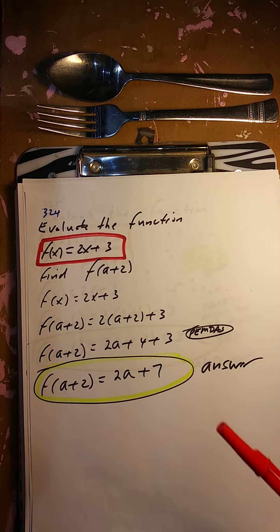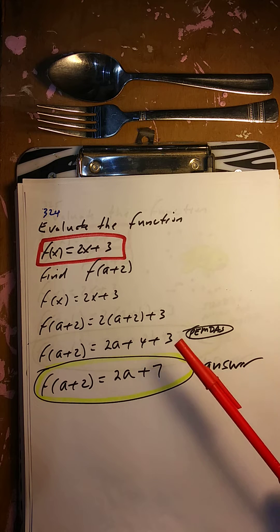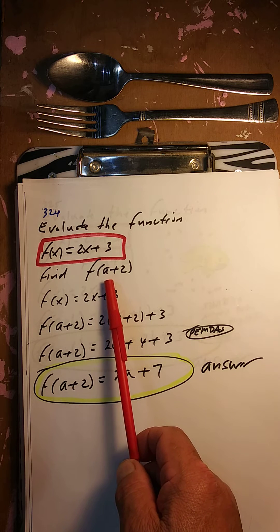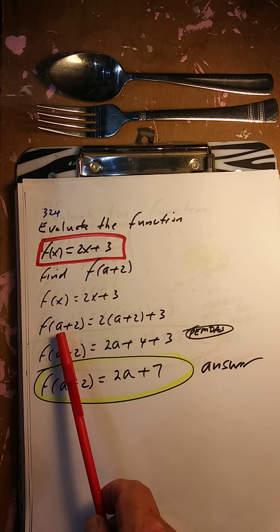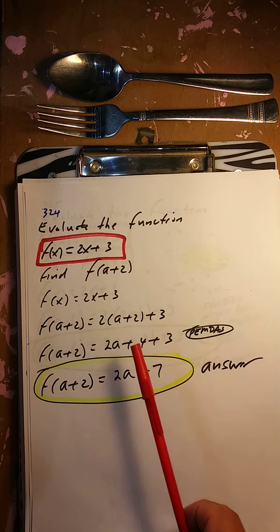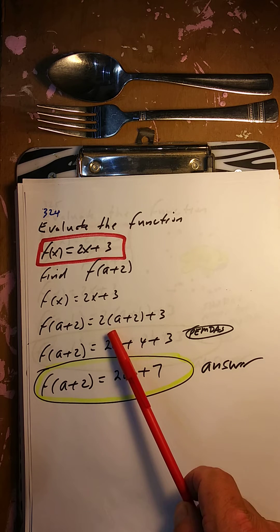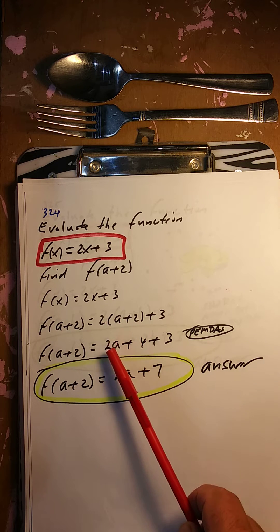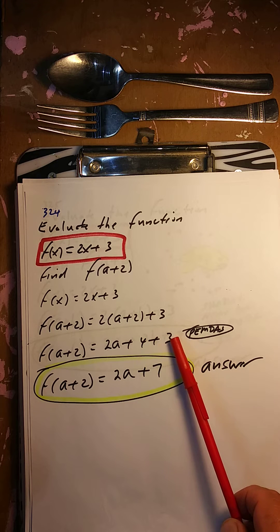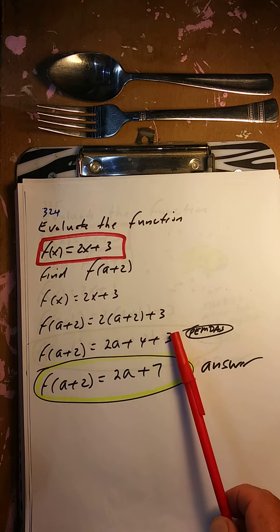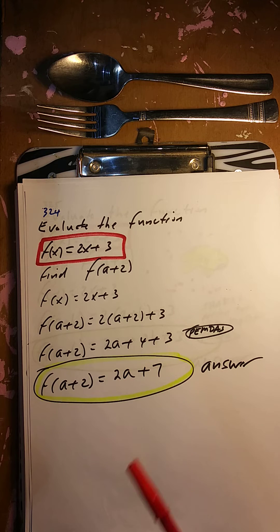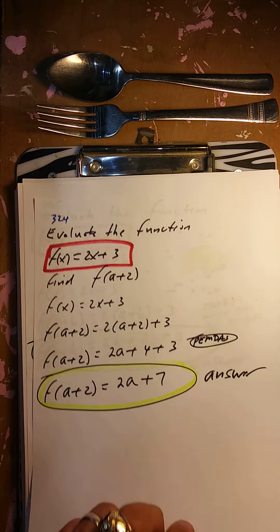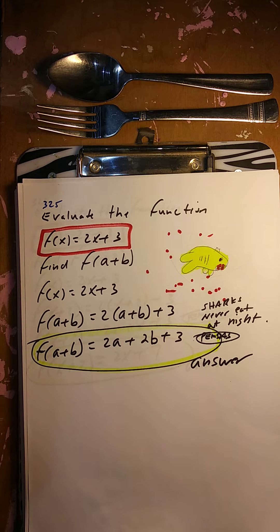Evaluate the function f of x equals 2x plus 3, find f of a plus 2. So put a plus 2 in for the x. f of a plus 2: multiply this out — 2 times a is 2a, 2 times 2 is 4, and 4 plus 3 is 7. So we have 2a plus 7.